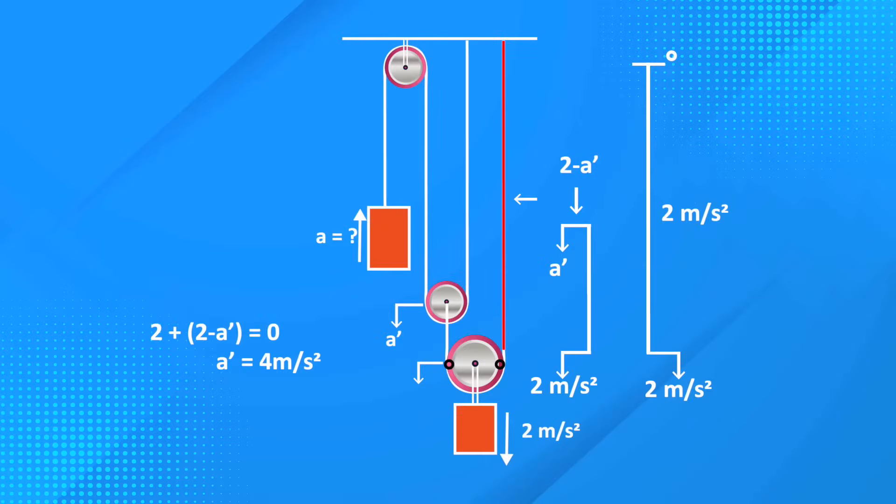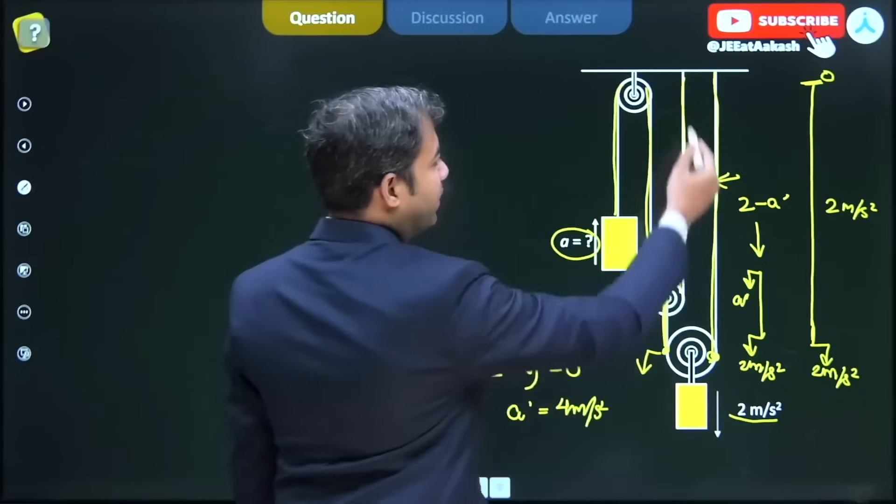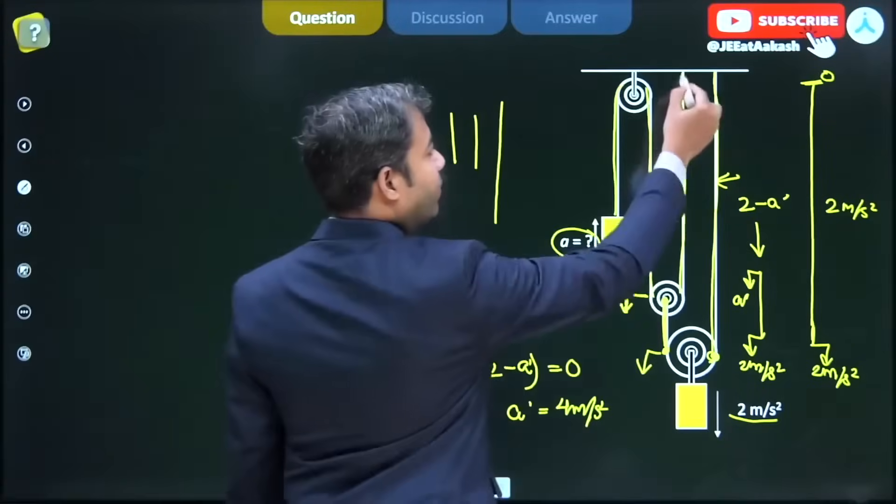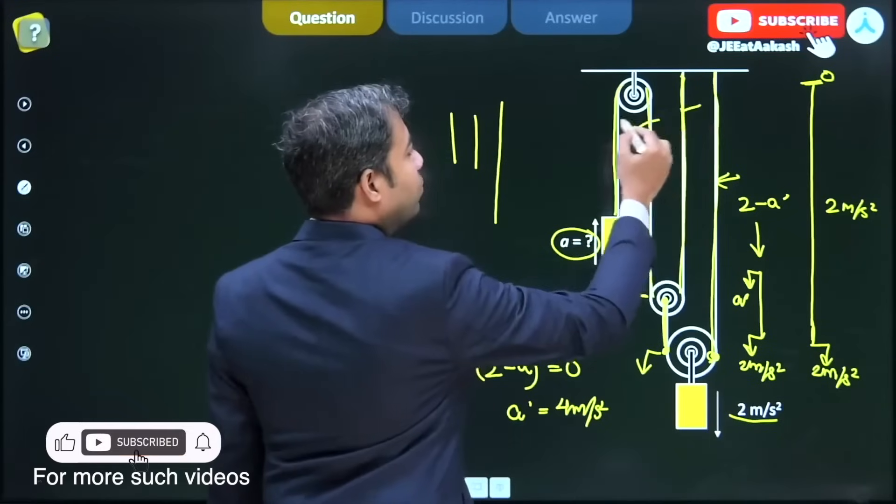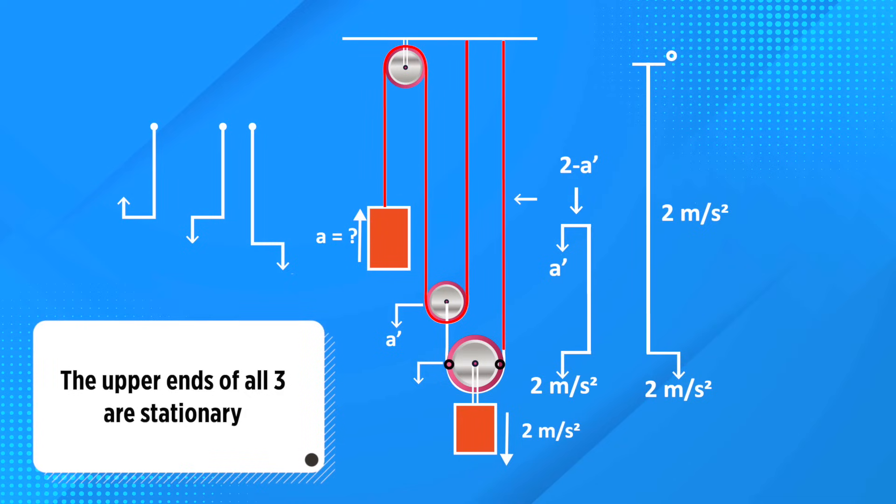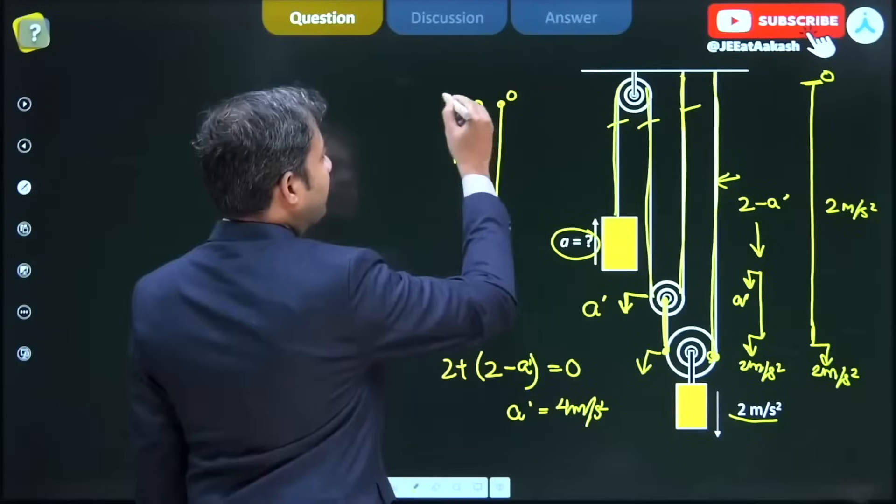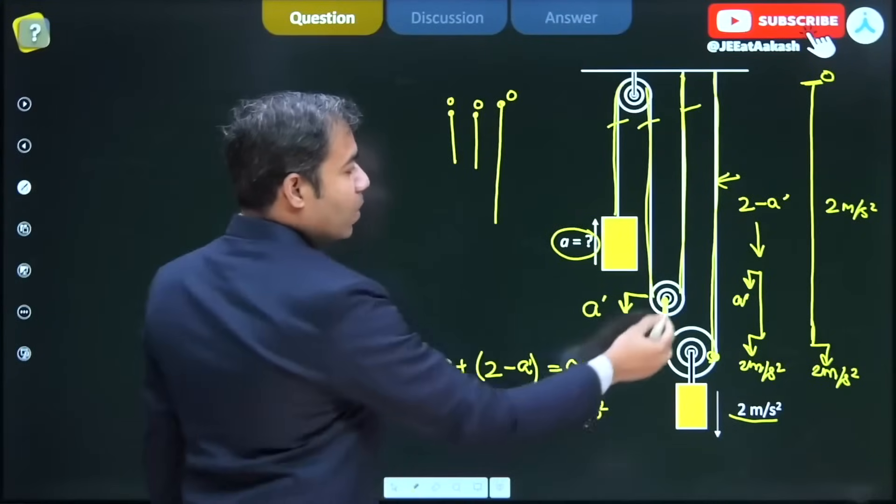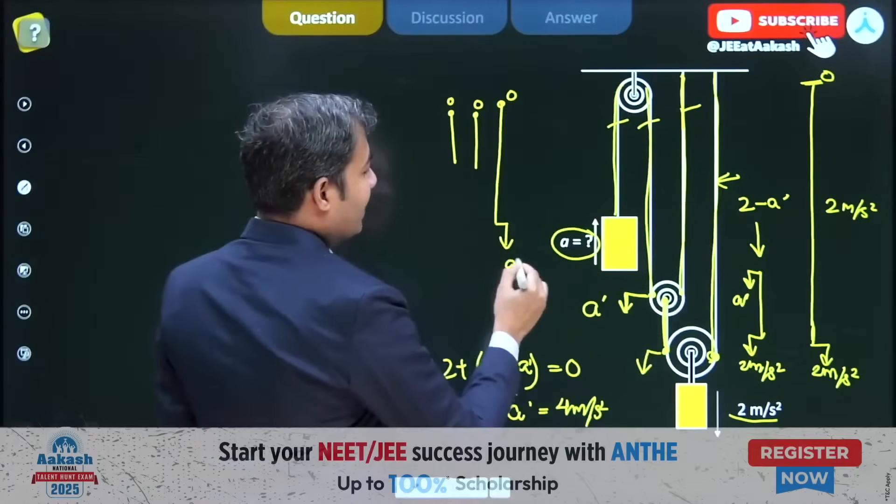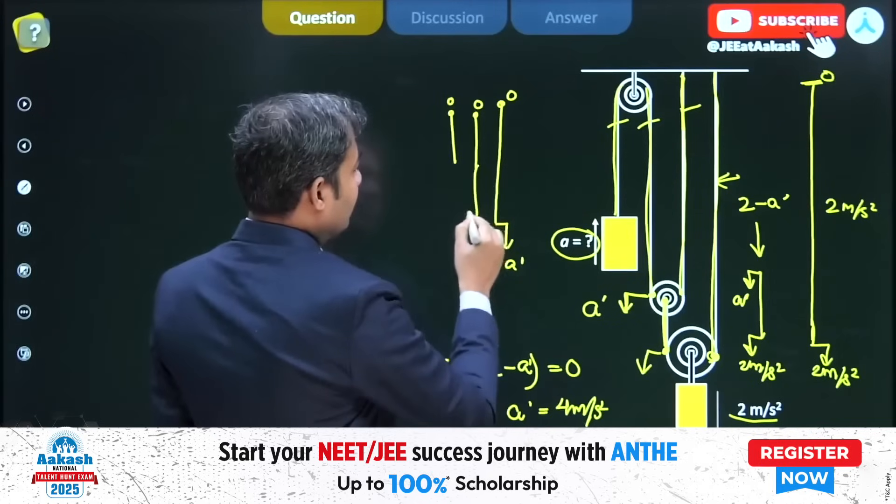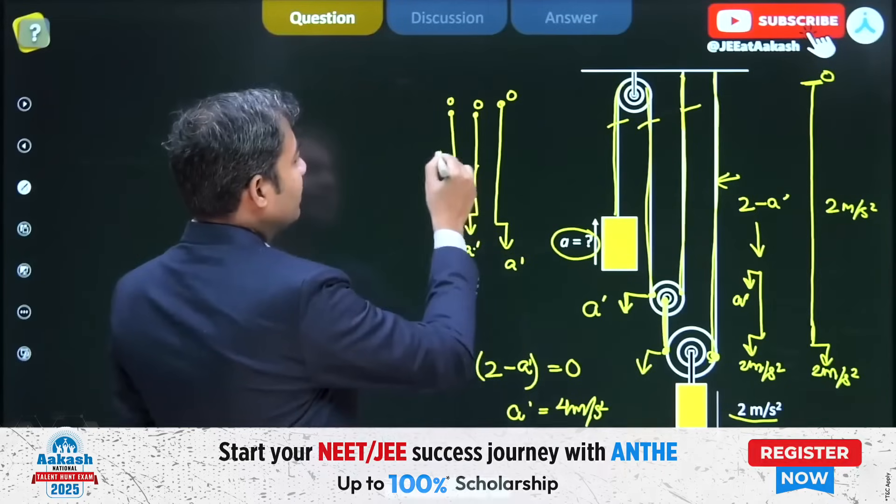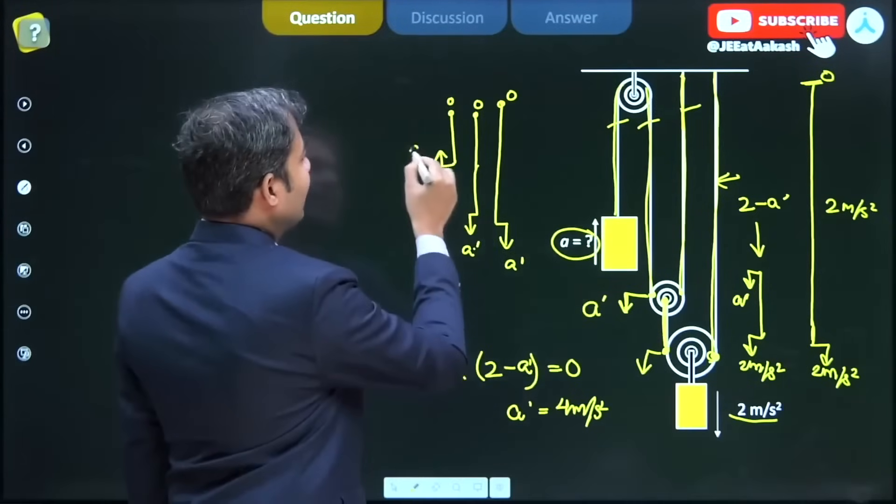For the second string, we can draw three segments - one, two, three straight line segments. The upper ends of all three are stationary. The lower ends of two strings are connected with the movable pulley, so both are moving with a'. The third end is moving along with the block with acceleration a.